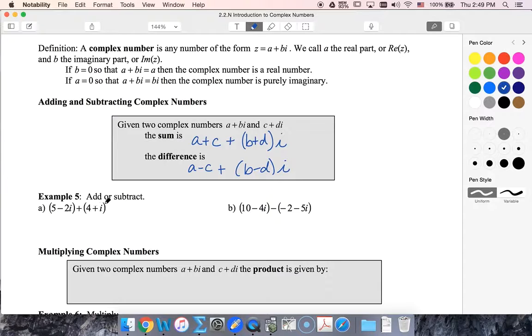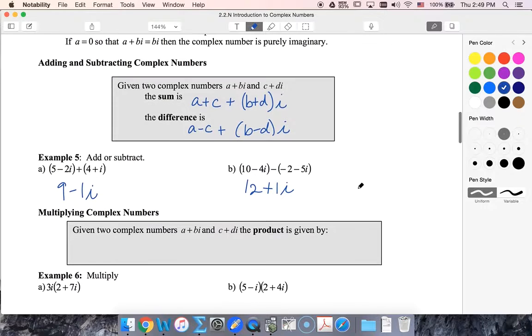It really is as easy as that. So now when I add these: five plus four is nine, negative two i plus one i is minus one i. So there's my new sum. Ten minus negative two, that's gonna be twelve. Negative four minus negative five is plus one i. I can do the same sort of thing finding the product.